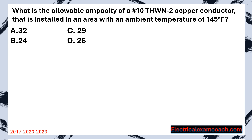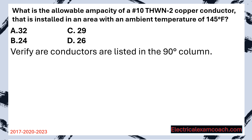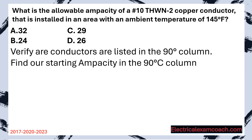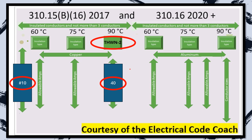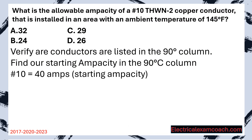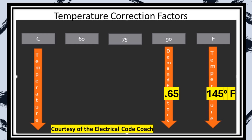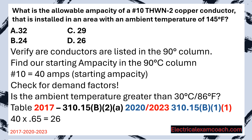Next problem: What is the allowable ampacity of a No. 10 THWN-2 copper conductor installed in an area with an ambient temperature of 145 degrees Fahrenheit? Step 1, verify THWN-2 is in the 90 degrees C column — it's there. Find the starting ampacity: No. 10 crosses over to 40 amps. Check for demand factors — ambient temperature is greater than 86°F, so there is one. Go to the corrections table, start on the right-hand side, find 145 degrees, slide over to get a correction factor of 0.65. Multiply 40 by 0.65 for a new allowable ampacity of 26 amps. Select D.